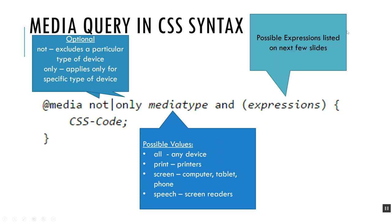Here's the general syntax for what a media query looks like. Unlike a typical CSS rule, this starts with @media, and then you have options. You can use the word 'not' to say do this when it's not this kind of device, or you can say 'only' to say do this when it's only this kind of device. Both of these are actually optional and you can just work with dimensions if you want.